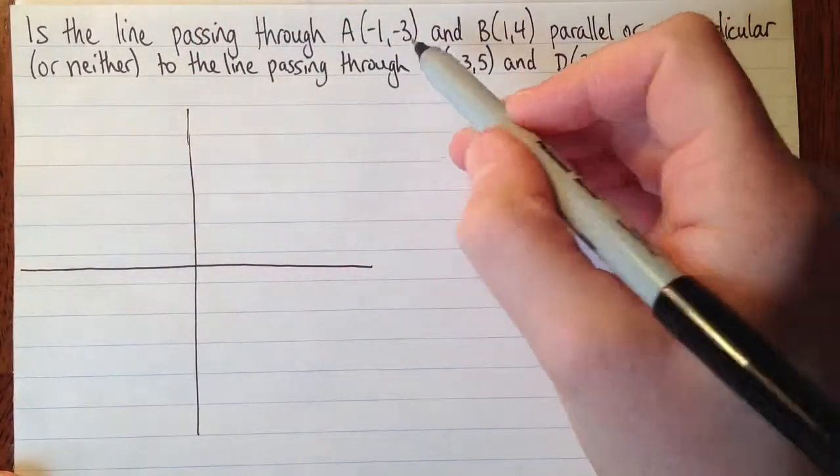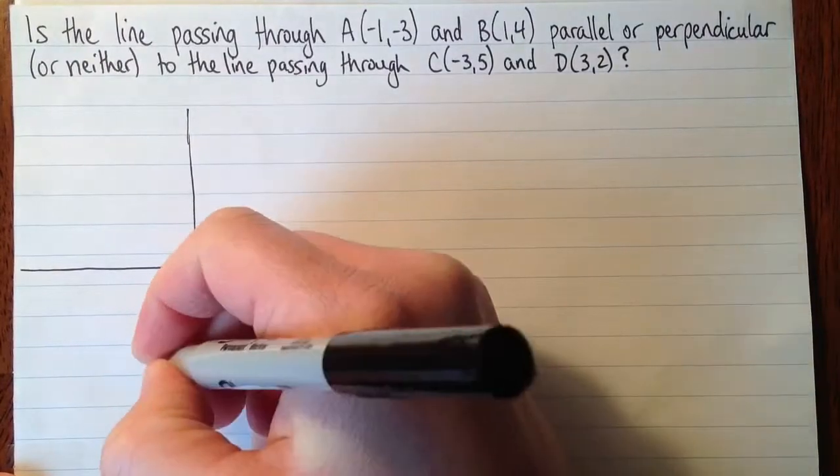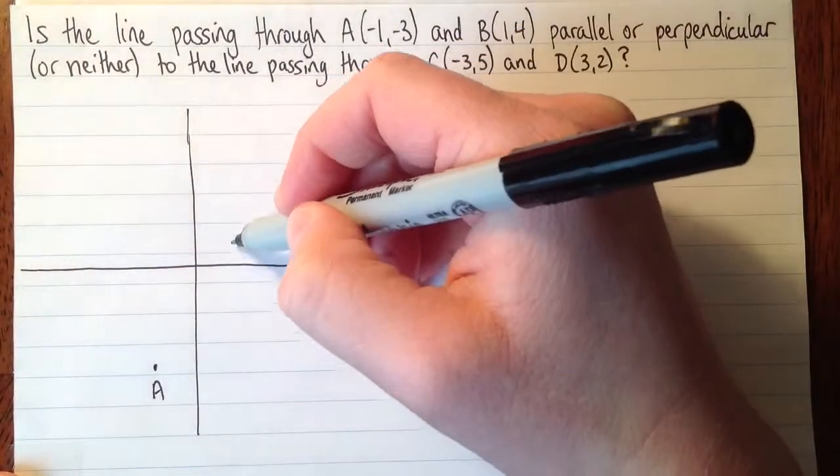So the point A is (-1, -3). B is (1, 4).